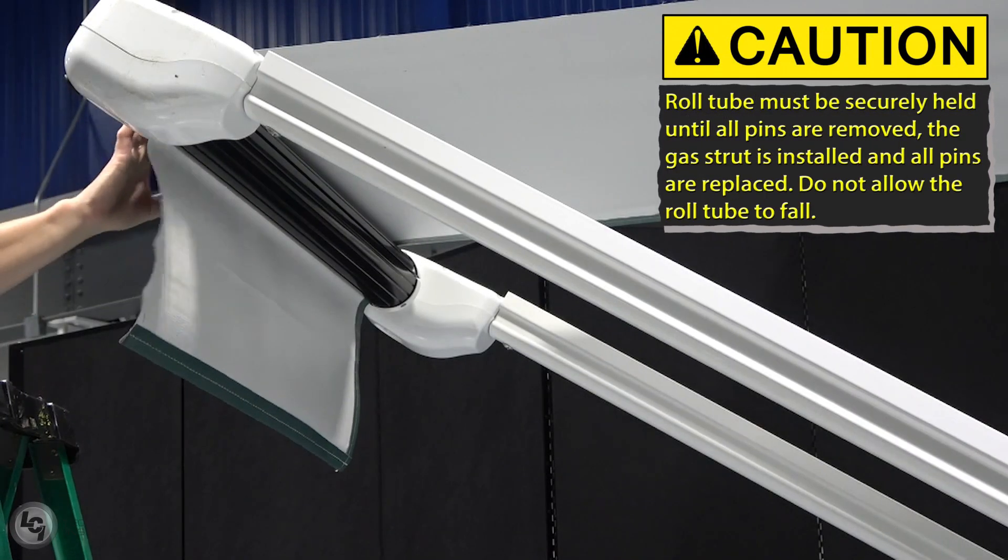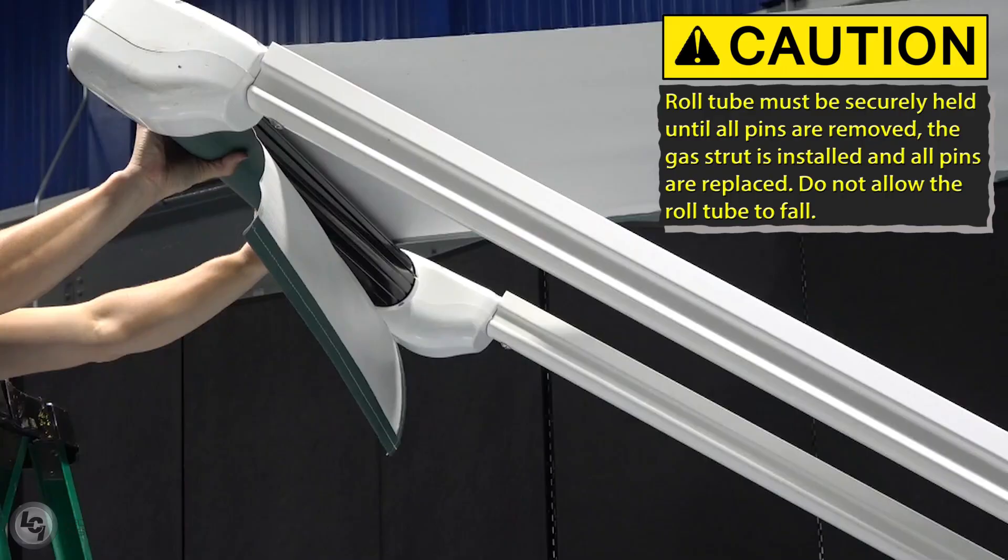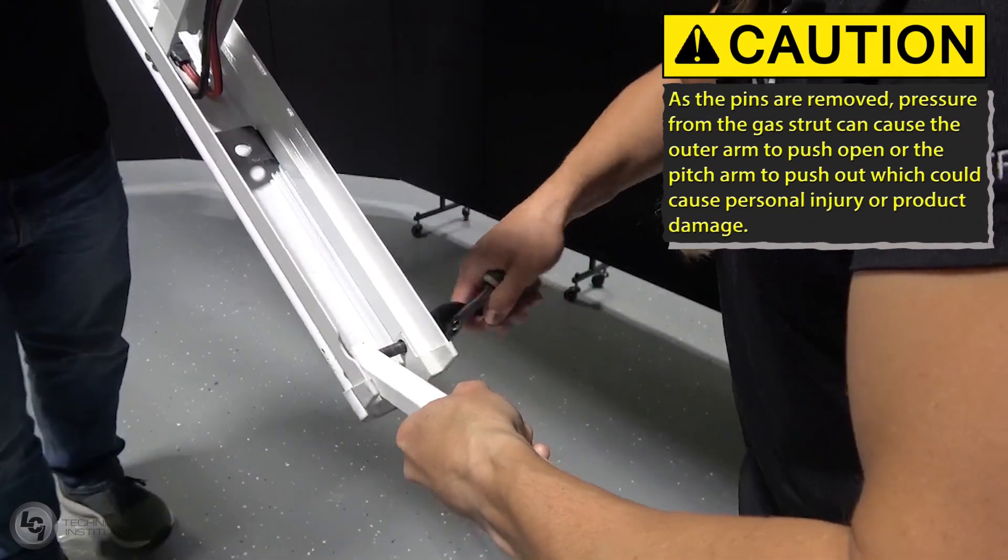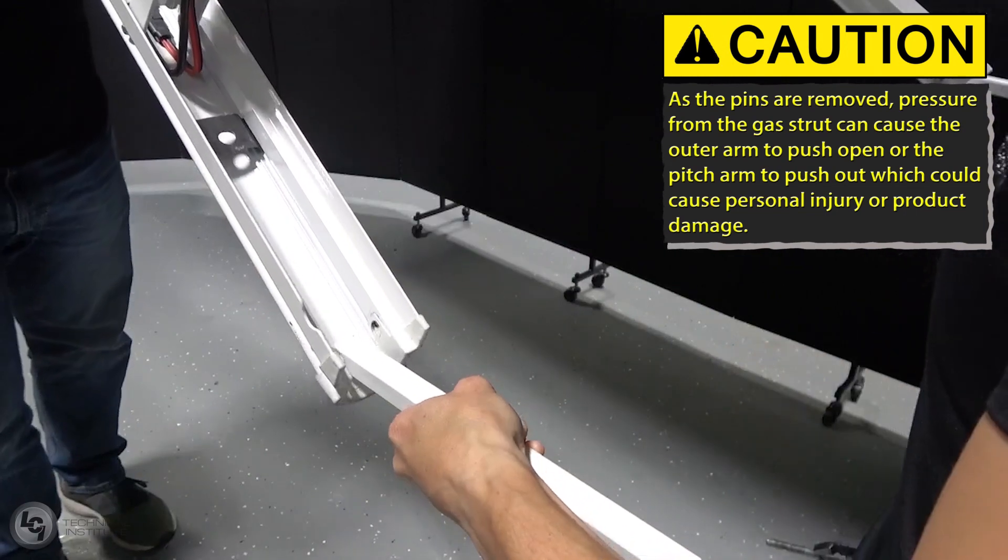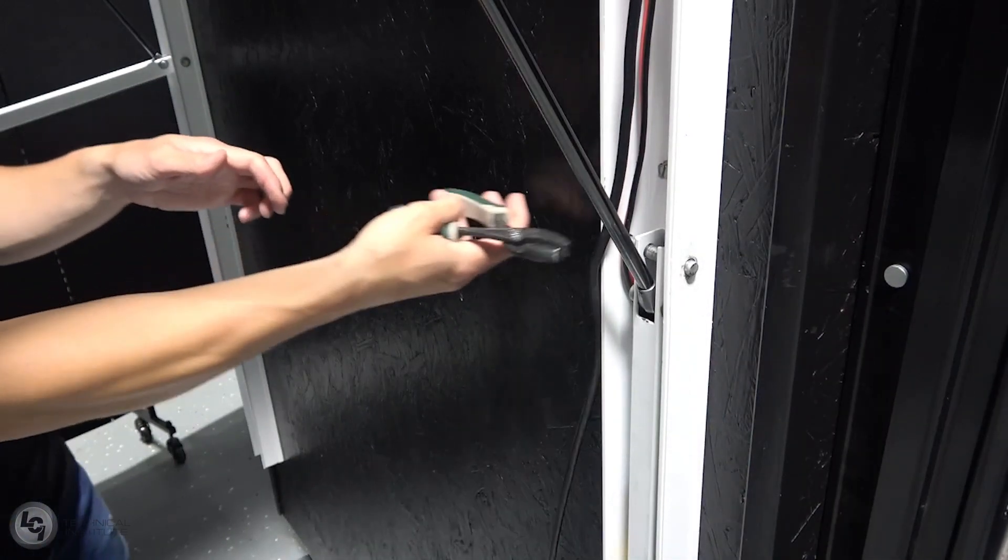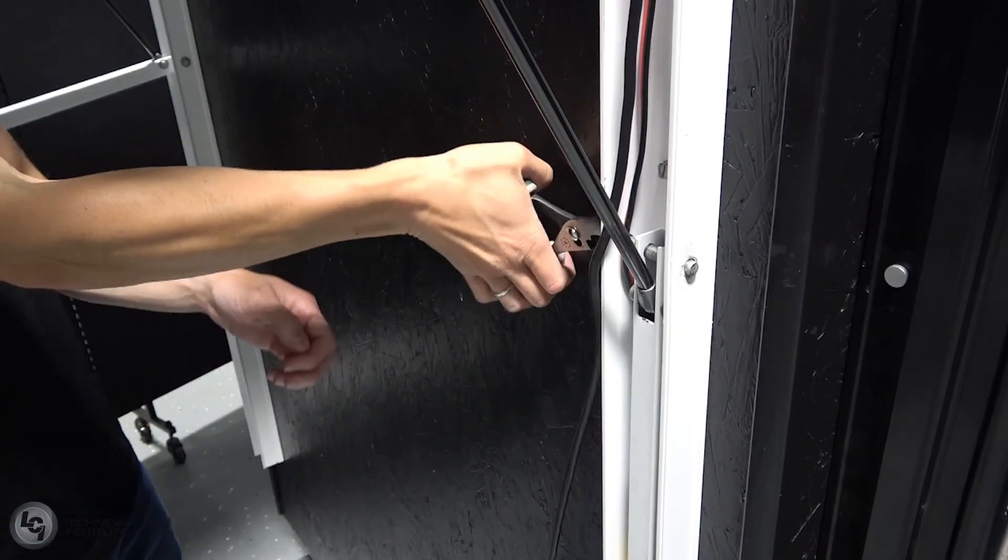Before disassembling, be sure that the roll tube is properly supported. With the help of another person, gently remove the pins in each respective location. A hammer might be helpful in order to get the pins completely removed, as it alleviates some of the pressure that might be on the pins from operation.